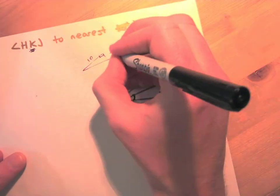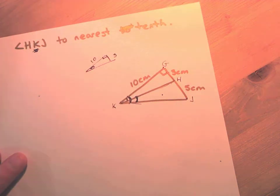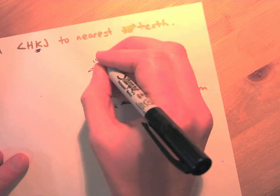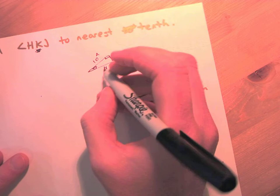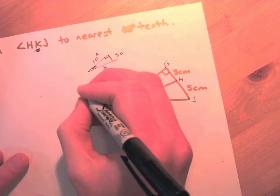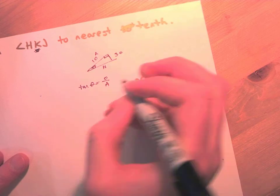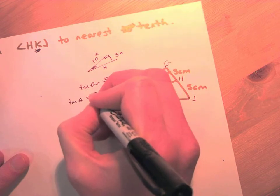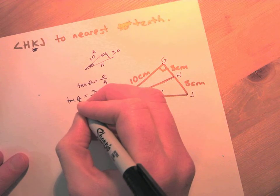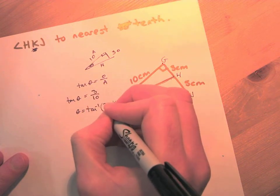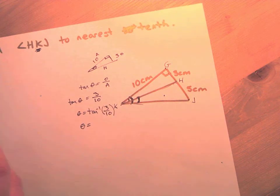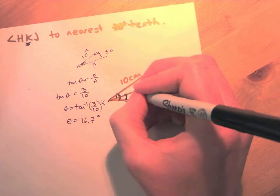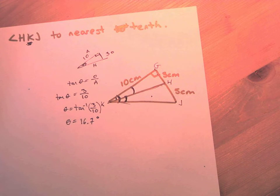Working with the small right triangle separately: O = 3, A = 10. Using tangent: tan θ = O/A = 3/10. So θ = tan⁻¹(3/10) = 16.7 degrees. That small angle from the base line to the lower ray is 16.7 degrees.